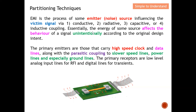The primary emitters are those that carry high-speed clock signals — very high frequency clocks and data lines — along with parasitic coupling to slower speed lines. We do not want to run high-speed lines alongside low-speed lines because coupling may occur. We also want to be careful about power lines and ground lines, which can potentially become a medium for interference.